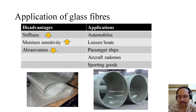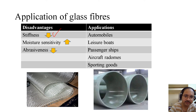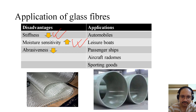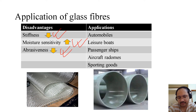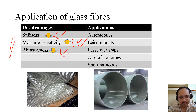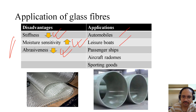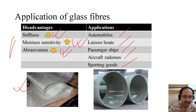Before understanding the applications of glass fibers, we need to know the limitations. The stiffness of glass fibers is pretty low, there is high moisture sensitivity, and abrasion resistance is low. Think about glass itself — glass also has these properties, and they carry over into glass fibers. Applications include automobiles, leisure boards, passenger ships, aircraft radomes, and sporting goods.